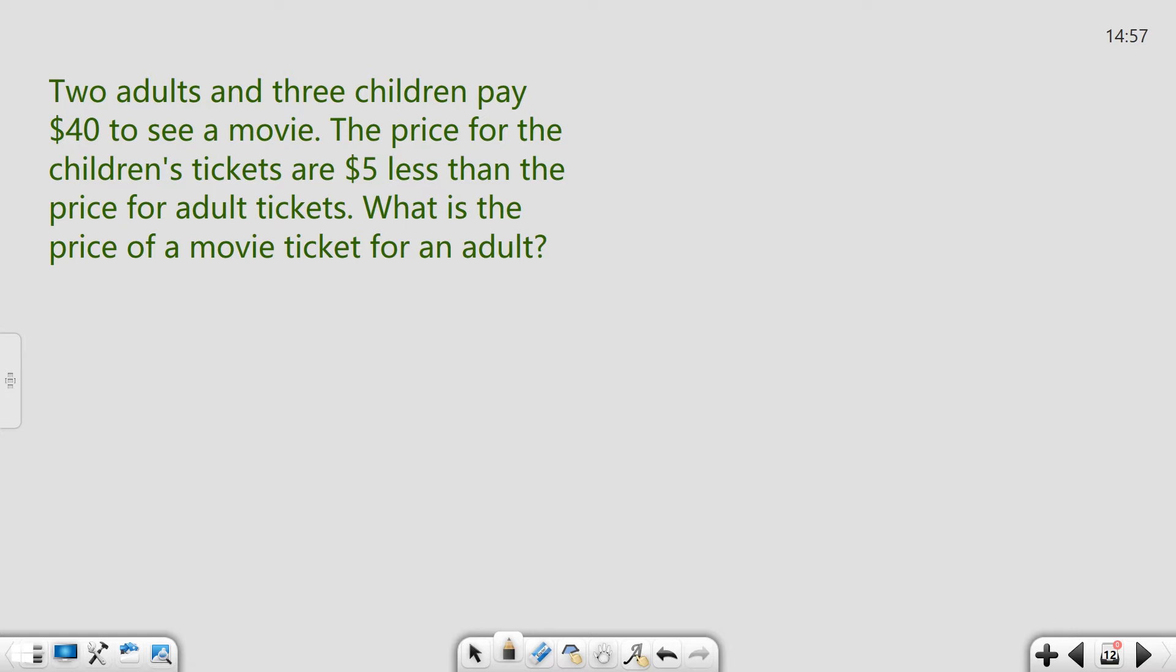So two adults and three children pay $40 to see a movie. The price for the children's tickets are $5 less than the price for adult tickets. What is the price of a movie ticket for an adult? Alright so let's see if we can piece together this equation and write it out and solve it.